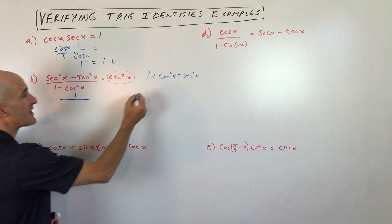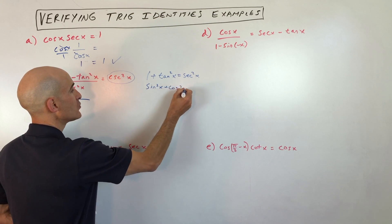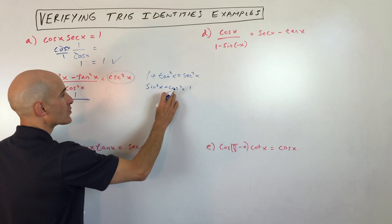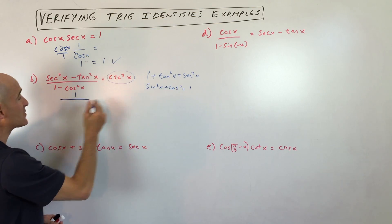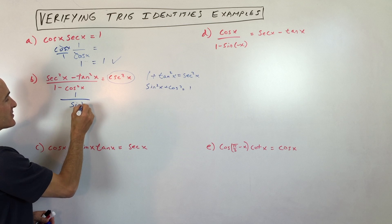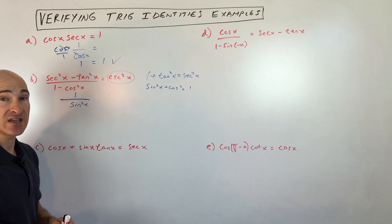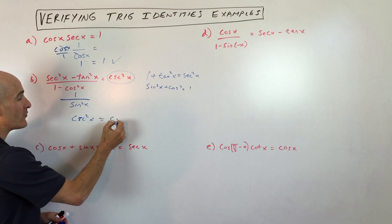And then the same thing with this denominator. If you remember the Pythagorean trig identity, sine squared plus cosine squared equals 1. That's the basic Pythagorean trig identity. 1 minus cosine squared, if I subtract cosine squared from both sides, you can see that that's going to equal sine squared. So I'm going to replace that with sine squared x. And we know that the reciprocal of sine is cosecant. But since this is squared, this is going to be equal to cosecant squared x. And so there you go. You've proved it.